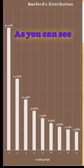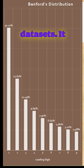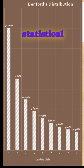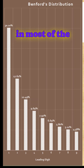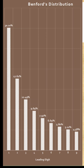What is Benford's Law? As you can see on the screen, Benford's Law, also known as the Newcomb-Benford's Law, is an observation about the leading digits of the numbers found in real-world datasets. It is also known as the first-digit law. It is a statistical principle that states that in most real-world datasets, the leading digit, which is the leftmost non-zero digit, is likely to be a small number.